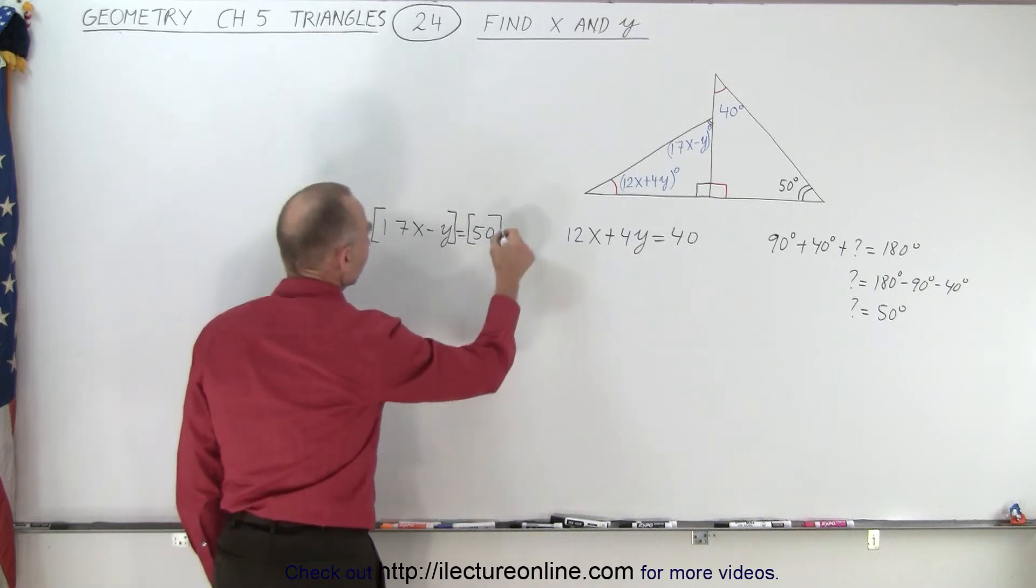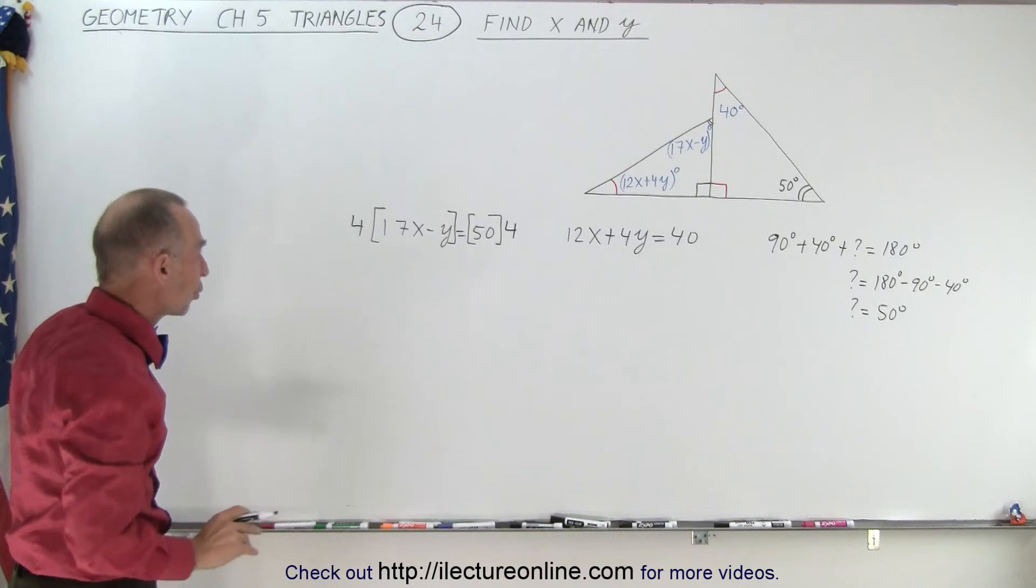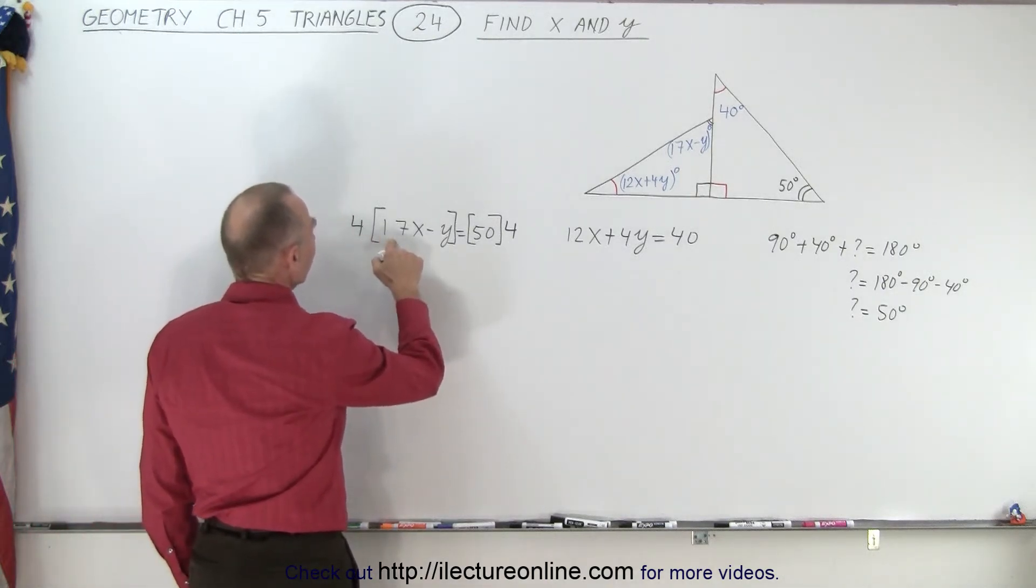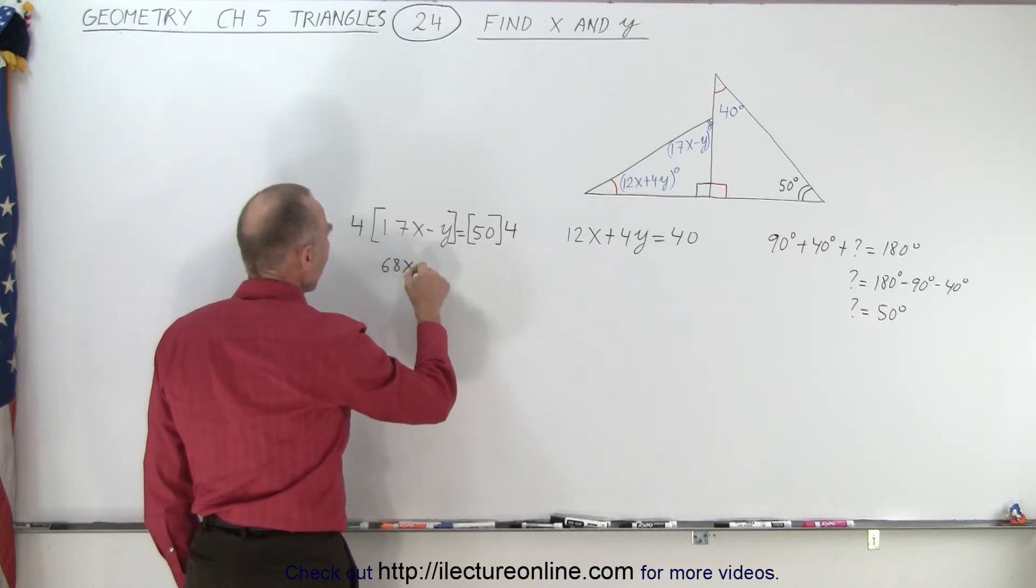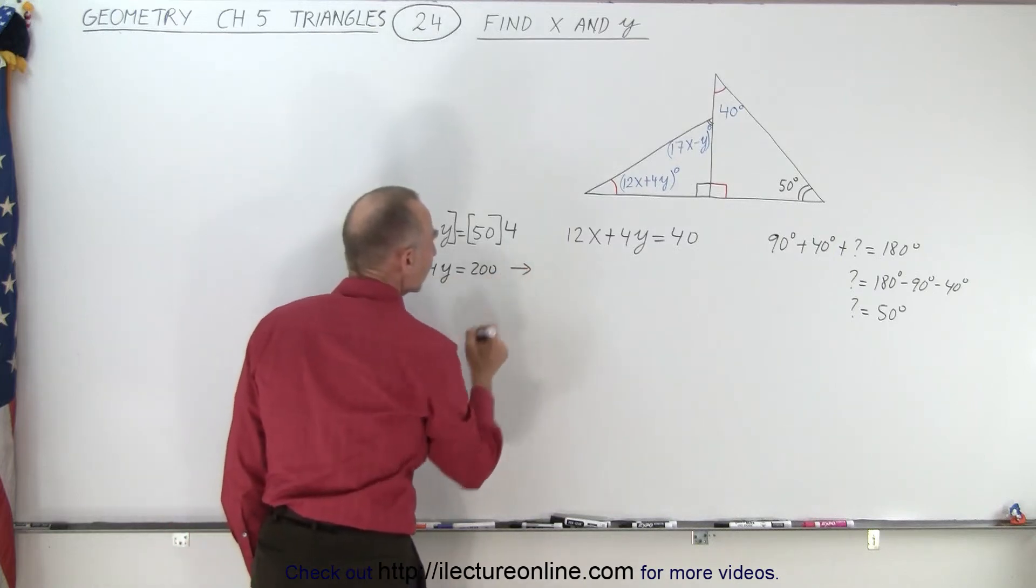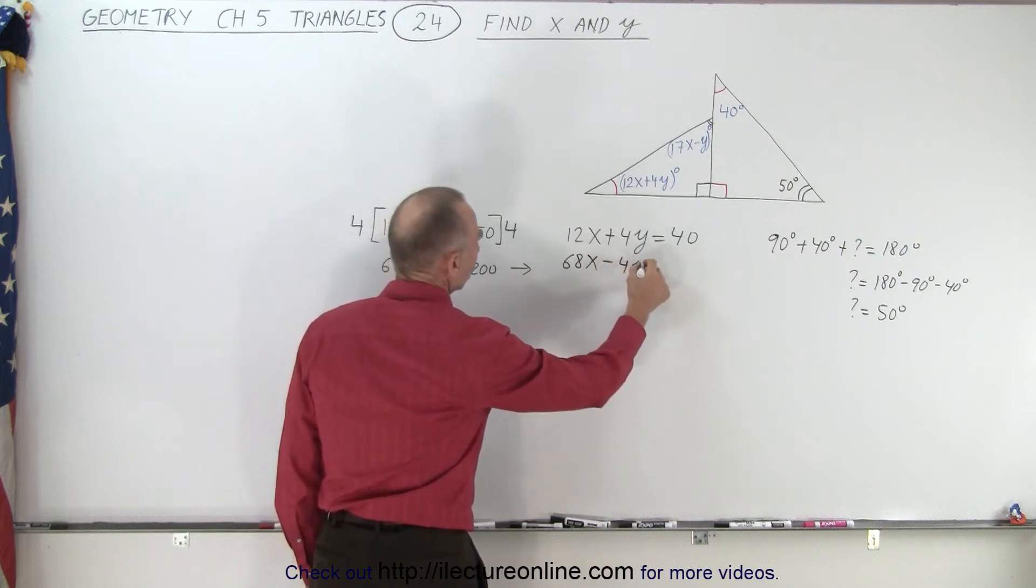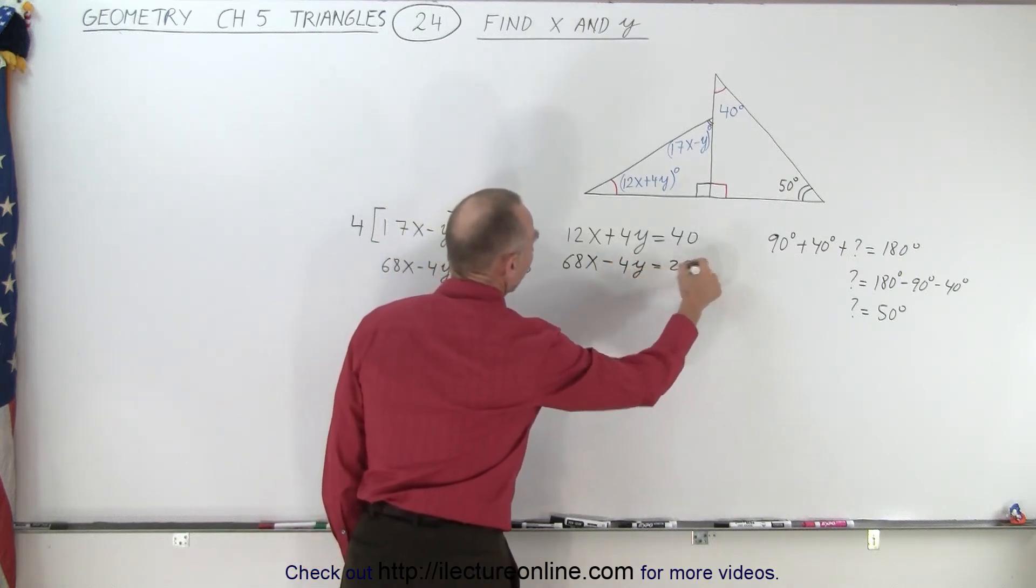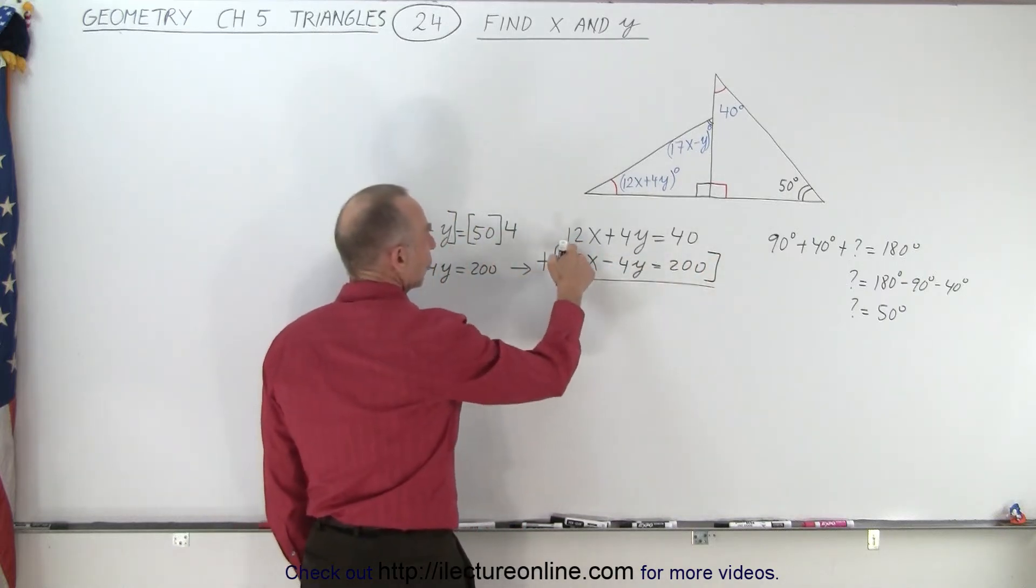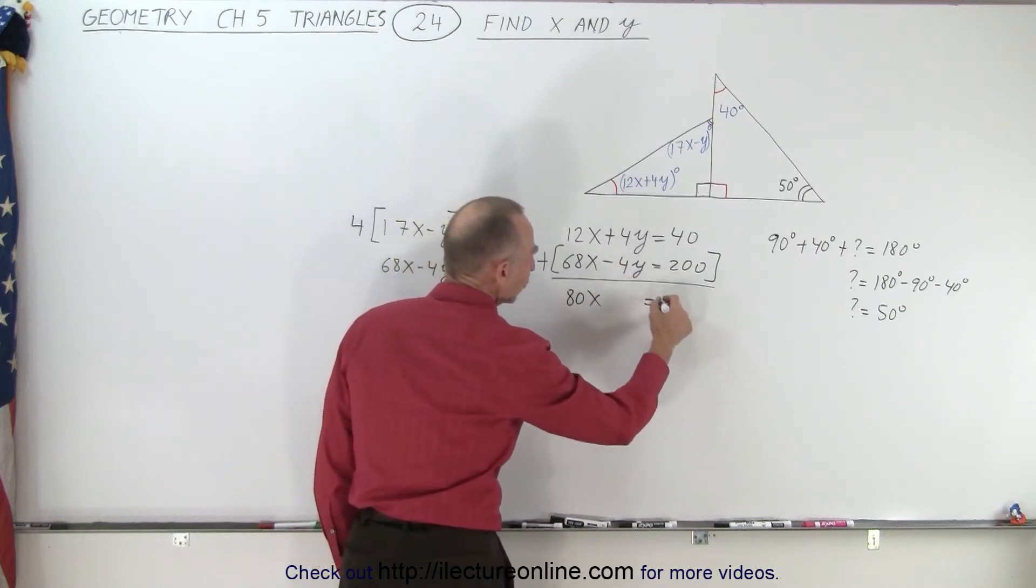So I multiply the left side by 4, the right side by 4. If I multiply both sides of the equation by the same number I do not change the equation. So here we can say that twice that is 34 times 2 is 68, so we get 68x minus 4y is equal to 200. And we write this again, 68x minus 4y is equal to 200. And now I can add the two equations together. When I do that I get 12x plus 68x which is 80x. The y's are eliminated, equals 240.